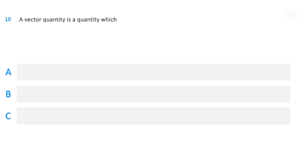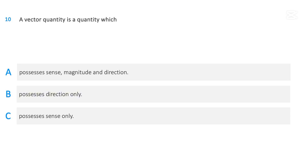A vector quantity is a quantity which: possesses sense, magnitude, and direction; possesses direction only; or possesses sense only. The correct answer is possesses sense, magnitude, and direction.